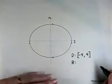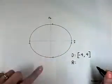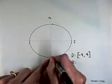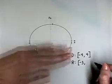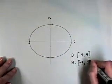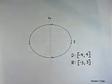For our range, we look from the bottom of the graph to the top. The smallest value here is a -3, and that goes all the way through. We pick up all values until we get to positive 3. And again, we can enclose that in a set of brackets.